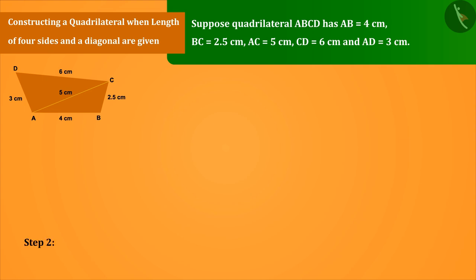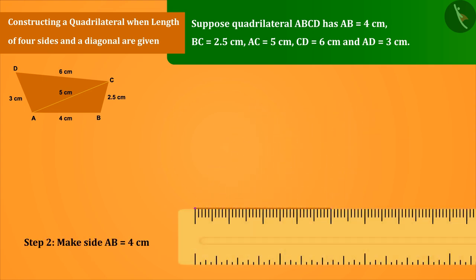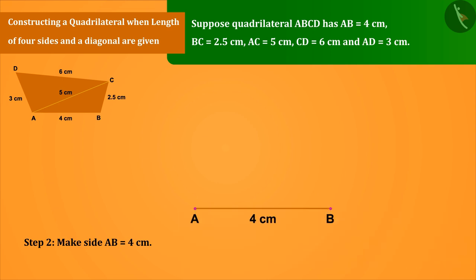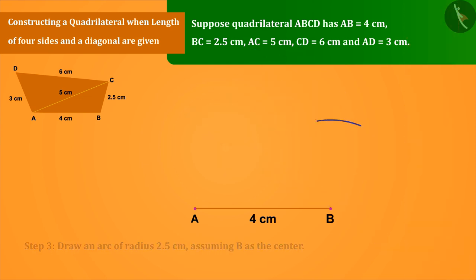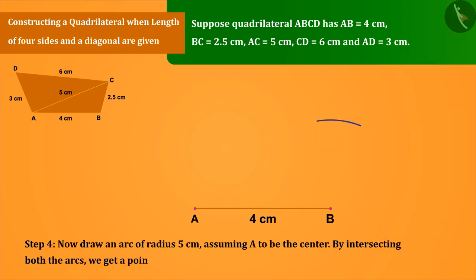Step 2: Make side AB equals 4 cm. Drawing an arc of radius 2.5 cm, assuming B as the center. Now draw an arc of radius 5 cm, assuming A to be the center.